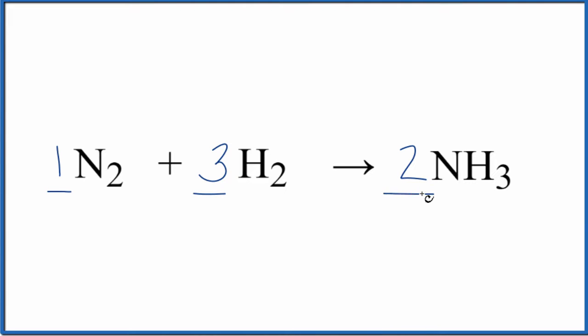And these coefficients, we use these to find the ratio for N2, H2, and NH3. For example, we could say the ratio of N2 to H2 is one to three. Or you could say H2 to NH3 is three to two. So the coefficients from the balanced equation, that's what gives us the mole ratio.